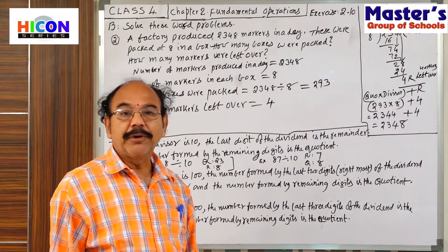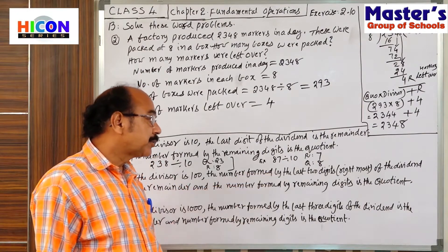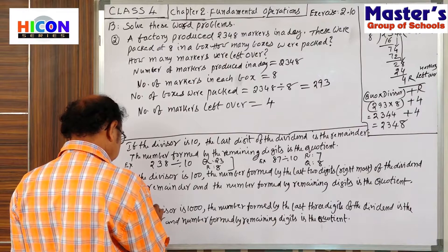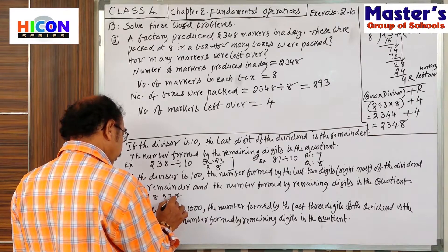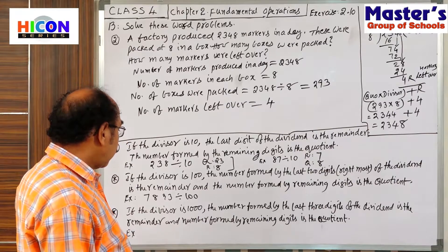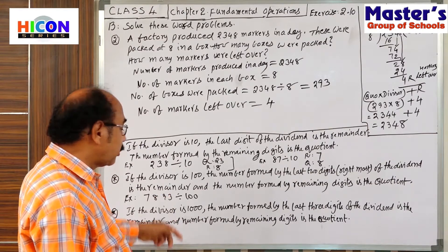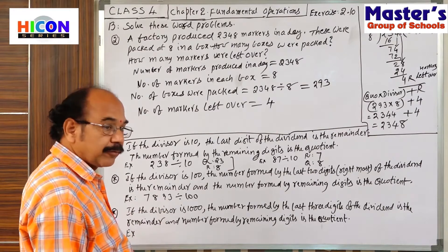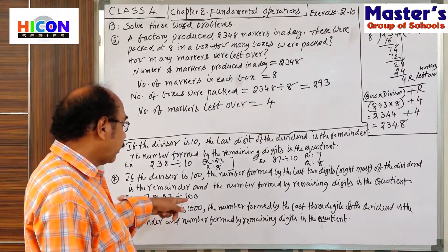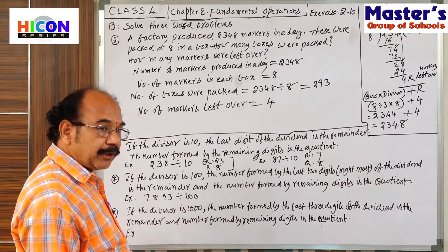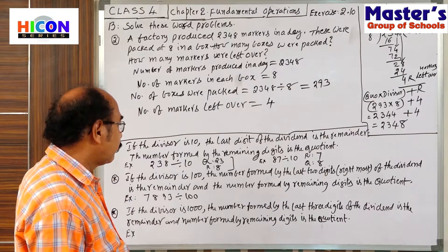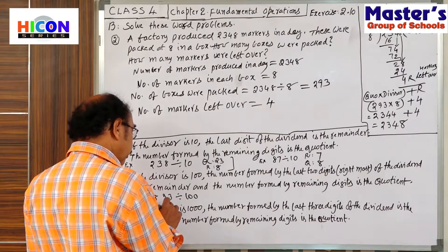And the number formed by the remaining digits of the dividend is the quotient. For example, 7,893 divided by 100. What is the number formed by the last 2 digits? 93. That is the number. Because in 100 there are 2 zeros. That's why we take the number formed by the last 2 digits of the dividend. So, the remainder is 93.